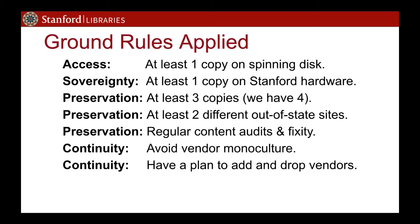On the ground at Stanford: from the access perspective, we keep one copy on spinning disk. For sovereignty, we need at least one copy on Stanford hardware, which we roll into that spinning disk copy. For preservation, we need at least three copies — we actually have four — and at least two of those need to be out of state. Stanford is in California, right on the San Andreas Fault, so we need off-site copies. We also perform regular content audits and fixity checks, and we must avoid vendor monoculture so no single vendor can lock us in.